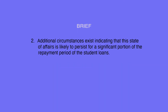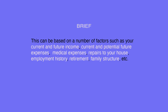Two, additional circumstances exist that are likely to persist for a significant portion of the repayment period of the student loans. This can be based on a number of factors, such as your current and future income, current and potential future expenses, medical expenses, repairs to your house, employment history, retirement, family structure, etc.